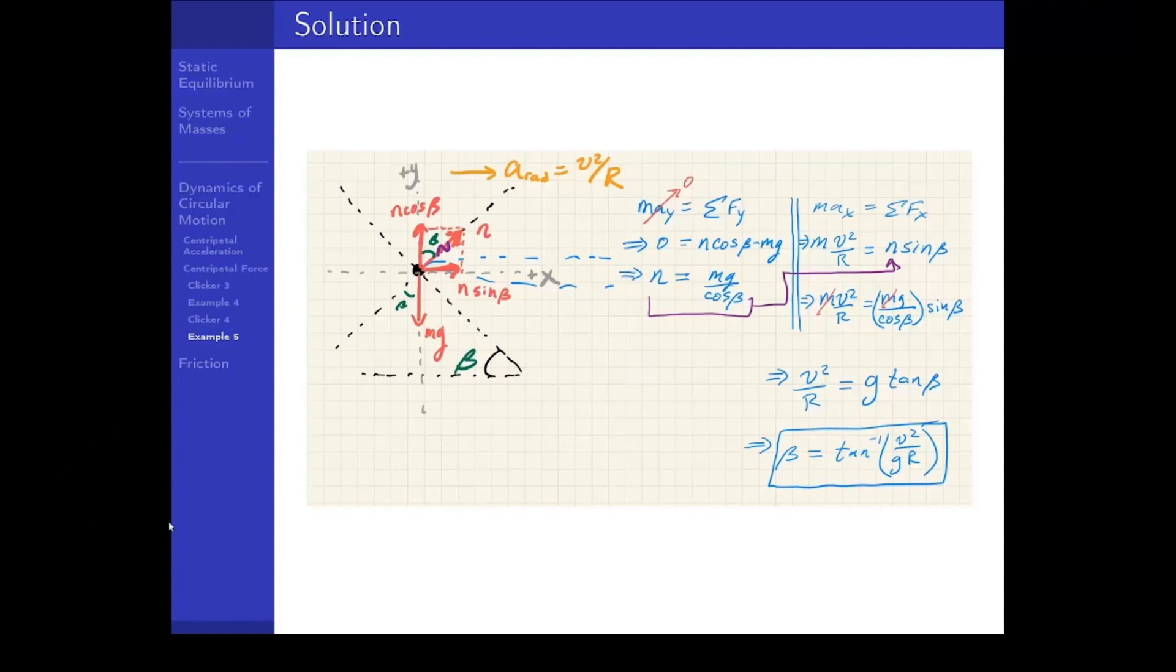And one more thing we can do, and we probably should have dealt with this first before considering special cases, is whether or not this is dimensionally consistent. That's meters squared over seconds squared divided by meter per second squared times meters. That will drop out, that'll be dimensionless, and it better be because you can only take the inverse tangent of a dimensionless quantity.